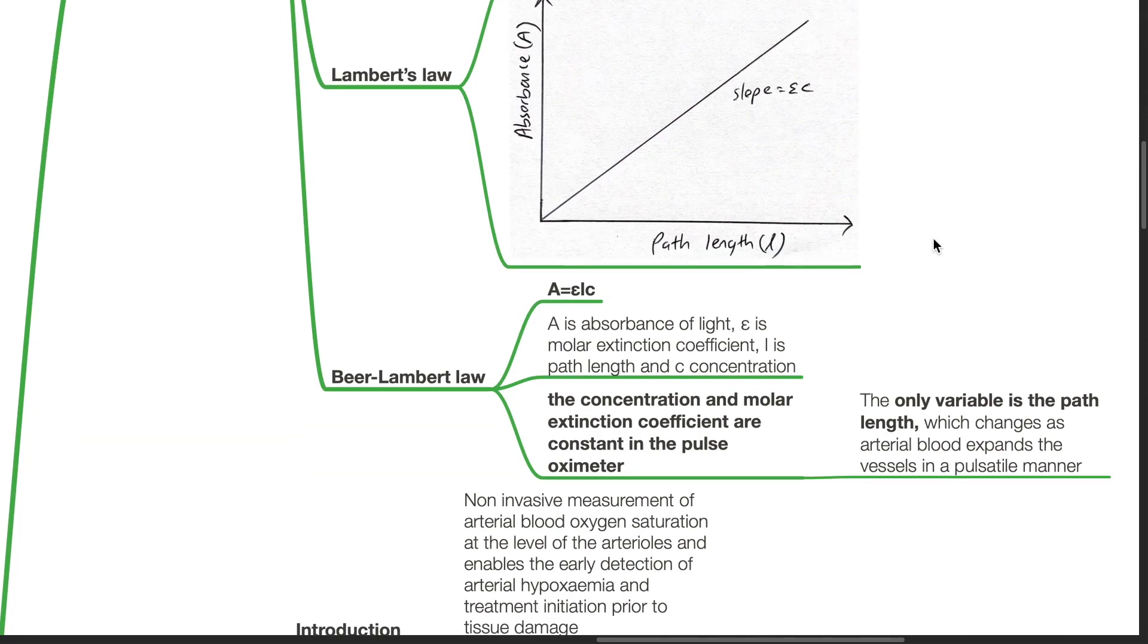Lambert's law states that the absorbance of light passing through a medium is proportional to the path length. Beer-Lambert law states that A equals epsilon L C, where A is the absorbance of light, epsilon is the molar extinction coefficient, L is the path length, and C the concentration.